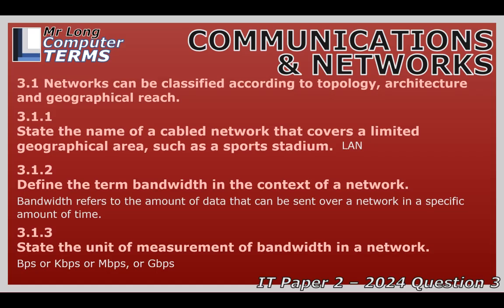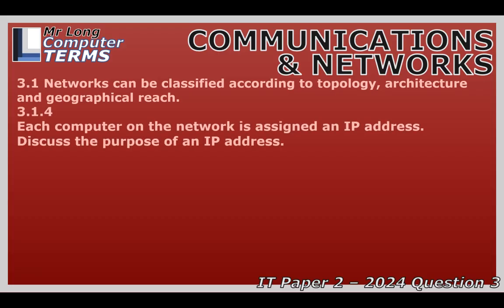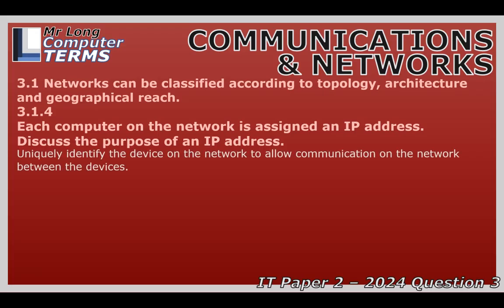With a LAN set up physically, how do devices actually talk to each other? How does a laptop know to send something to the printer down the hall and not the smart fridge? That's where the IP address comes in. Think of an IP address like a unique street address for every single device on a network — your printer, phone, server, everything gets one. Just like the post office needs an address to deliver a letter, the network needs that IP address to route data packets to the right device. We have older IPv4 addresses and now the much larger IPv6 system, which is crucial as we keep adding more devices to the internet.